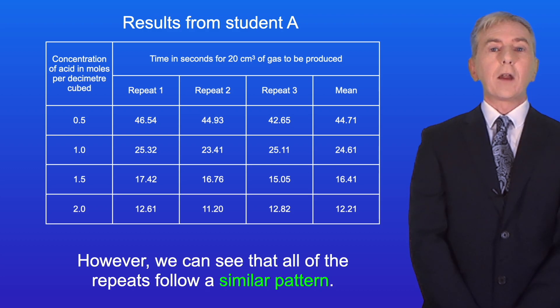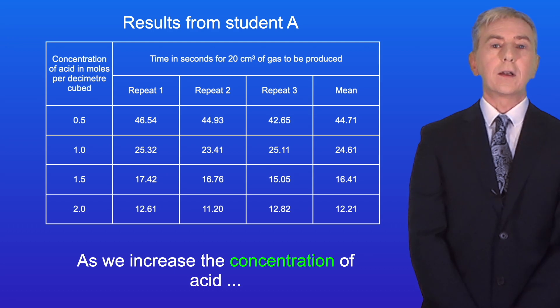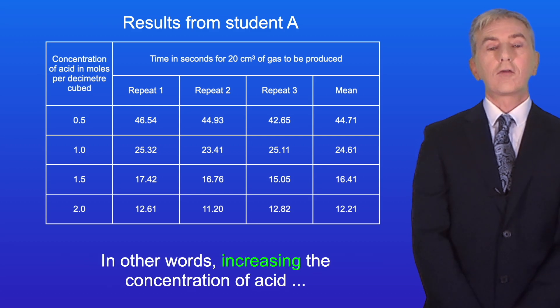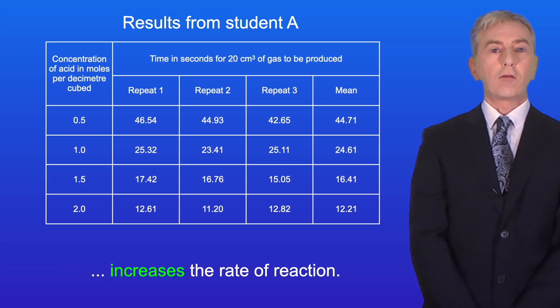However we can see that all of the repeats follow a similar pattern. As we increase the concentration of acid, the time taken for the reaction to produce 20 centimeters cubed of gas decreases. In other words, increasing the concentration of acid increases the rate of reaction.